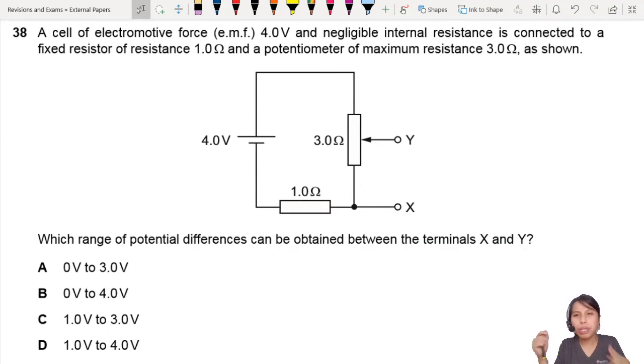Here you have an interesting potentiometer kind of circuit. You have everything labelled out for you nicely. The resistor is 1 ohm, maximum resistance is 3 ohm.